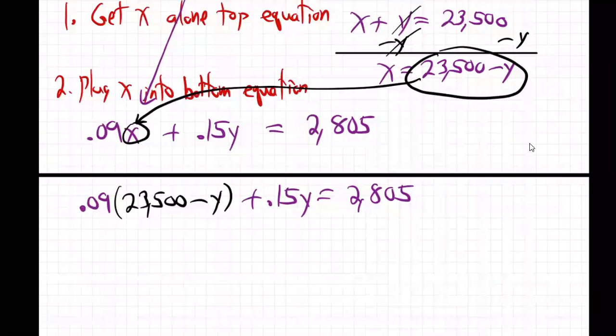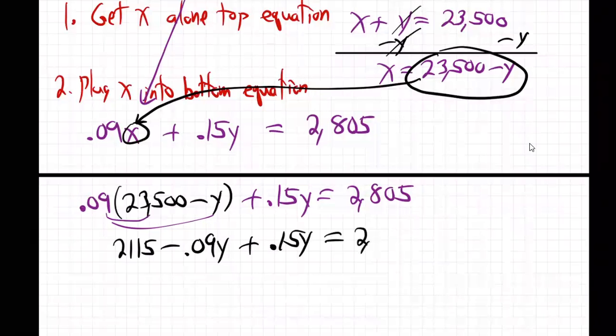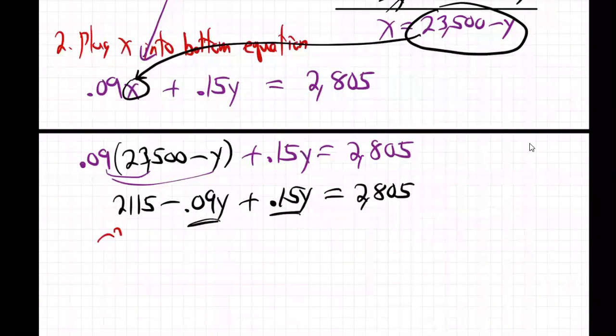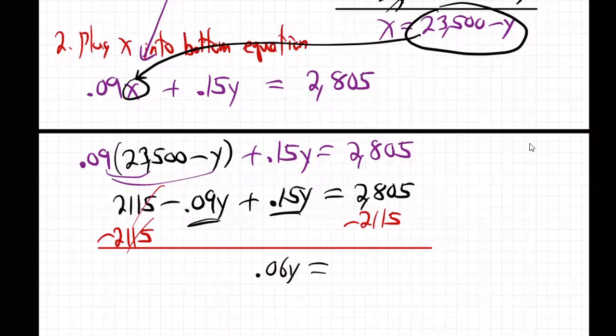Okay. So now, now we distribute through the parentheses. So now we just have one letter notice. So this is easier, right? We get, as we distribute on through, 2,115 minus 0.09Y plus 0.15Y equals 2,805. And so combining these together, oh, and let's go ahead and subtract 2,115 both sides, like that.